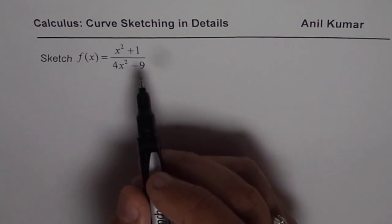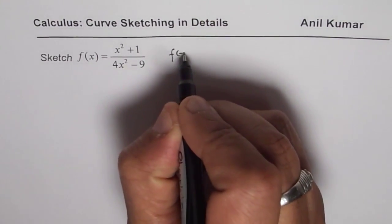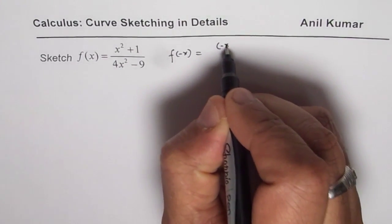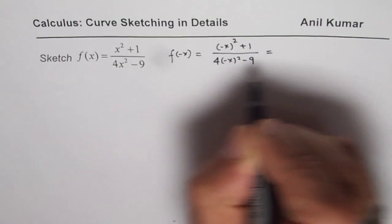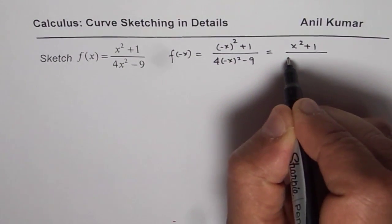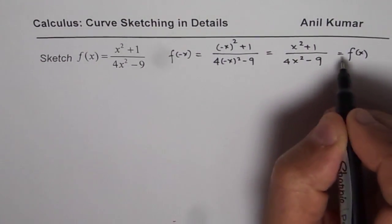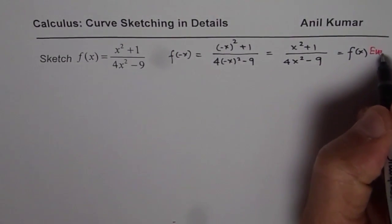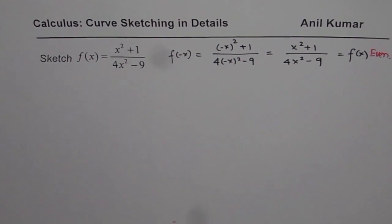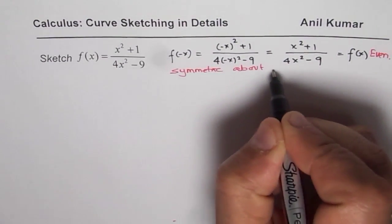One of the critical things about this function is that this is an even function. Let us find what is f of minus x. So f(-x) will be (-x)² + 1 divided by 4(-x)² - 9, which is the same as x² + 1 divided by 4x² - 9, which is f(x). So if f(-x) is the same as f(x), that means the function is even. Once you know that the function is even, it is symmetric about the y-axis.